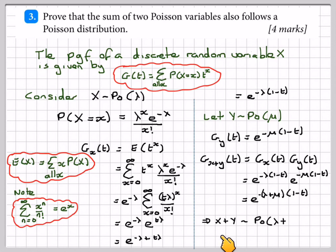Therefore, we can see that x plus y also follows Poisson (lambda plus mu). This is the format of the generating function for Poisson distribution.